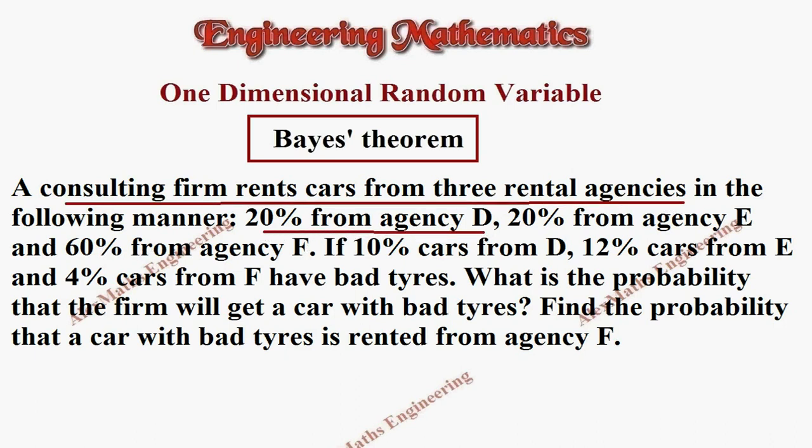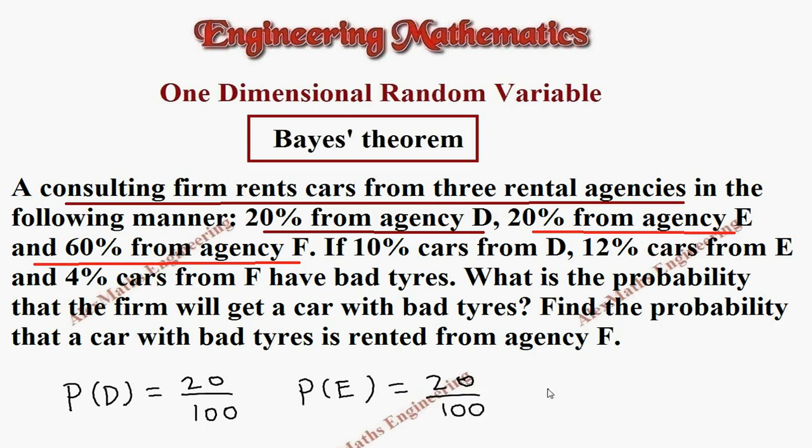So let's take this as probability of D which is 20 by 100. Then further they have given 20% from agency E and 60% from agency F. So P(E) which is 20 by 100 again, then P(F) for agency F is 60 by 100.